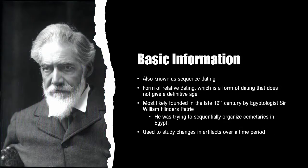This is a presentation on seriation dating. Some basic information is that it is also known as sequence dating. It is a form of relative dating, which does not give a definitive age of an artifact, unlike absolute dating. It was most likely founded in the late 19th century by Egyptologist Sir William Flinders Petrie, who was shown to the left. He was trying to sequentially organize the changes in cemetery styles in Egypt, and he developed this form of dating to make his work easier. Seriation dating is used to study changes in artifacts over a time period.